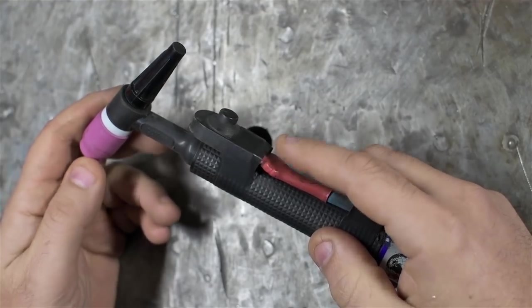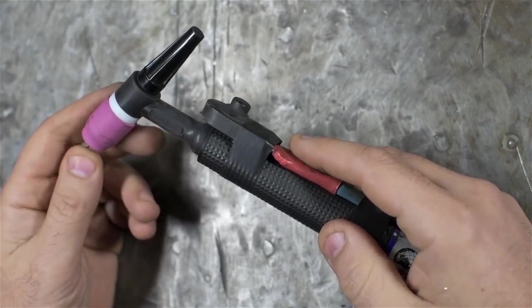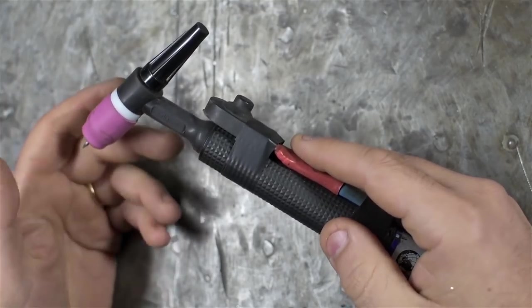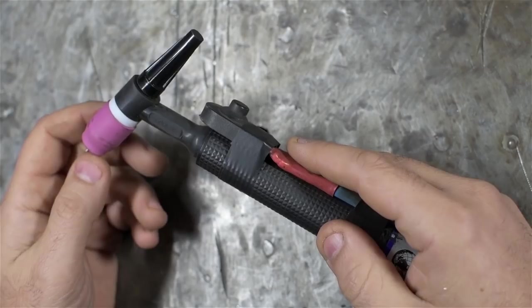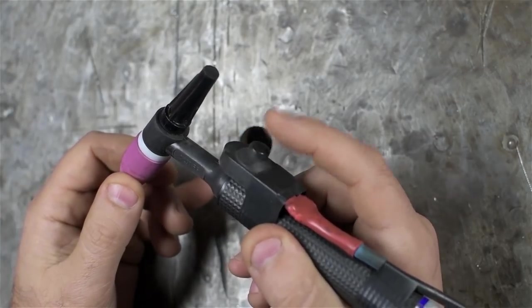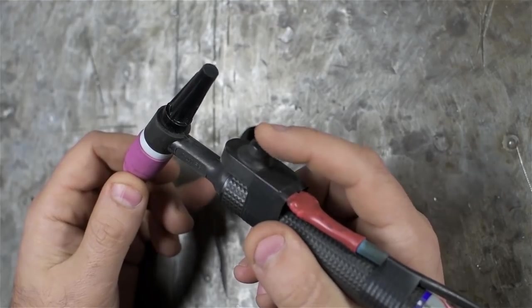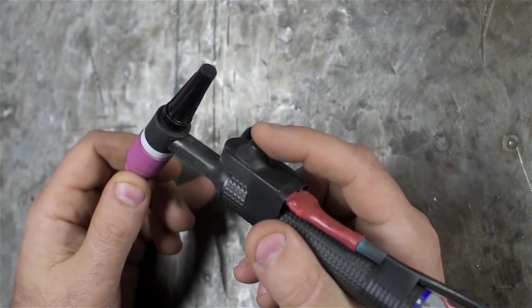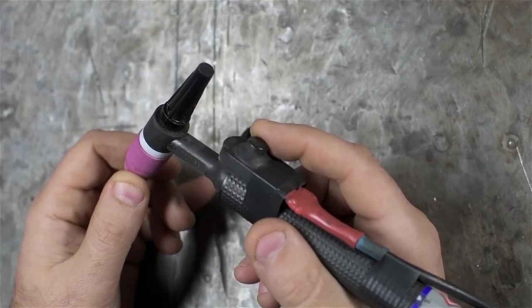4T mode is a little tricky to get used to when you first start using it. It was for me anyway. For me, it was a bit like patting my head and rubbing my belly at the same time. In 4T, the welder is now looking for state changes in the button, not just on and off anymore. It's sort of decoding more information from the button than it is in the 2T setting. As a result, it allows you to change more things on the sequencer than you could otherwise.